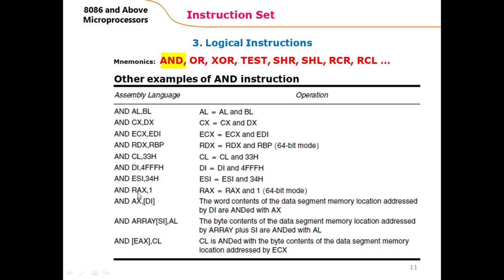Other forms include: AND CL, 38h — ANDs the 8-bit immediate value with the 8-bit CL register, result in CL; AND DR, immediate — a 16-bit immediate value ANDed with a 16-bit register; and a 32-bit immediate value ANDed with ESI, result in ESI. In 64-bit mode, AND RAX, 1 — the immediate value 1 is ANDed as a 64-bit value with RAX, result in RAX.